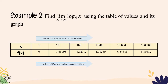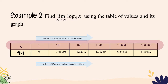Let's have example 2: Find the limit of log base 4 of x as x approaches positive infinity. In the previous example, x approached 0 from the right; in this example, x approaches positive infinity. Using a table of values, we assign values that are really approaching positive infinity: 1, 10, 100, 1,000, 10,000, and 100,000, along with their corresponding values of f(x).